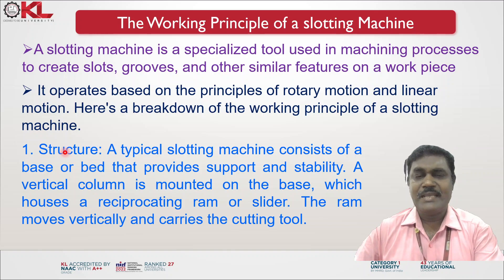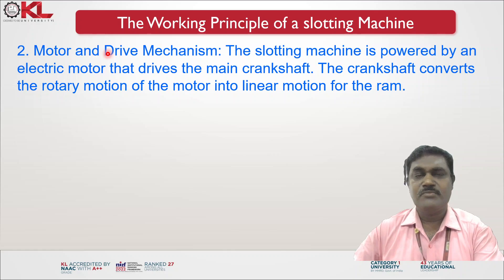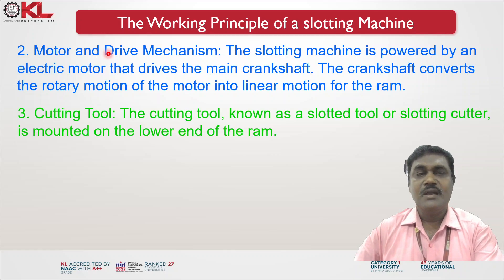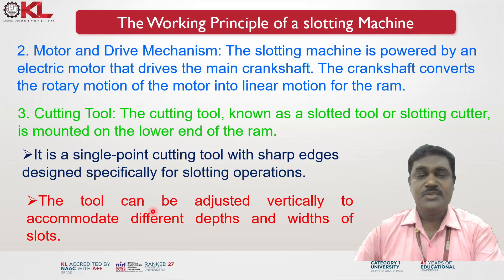The RAM moves vertically and carries the cutting tool. The slotting machine is powered by an electric motor that drives the main crankshaft. The crankshaft converts the rotary motion of the motor into the linear motion of the RAM. The cutting tool, known as a slotting tool or slotting cutter, is mounted on the lower end of the RAM. It is a single-point cutting tool with sharp edges designed specifically for slotting operations. The tool can be adjusted vertically to accommodate different depths and widths of slots.